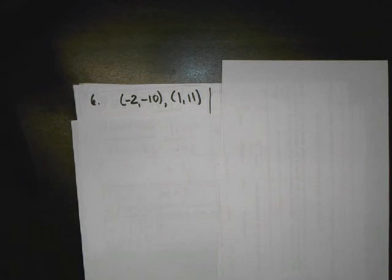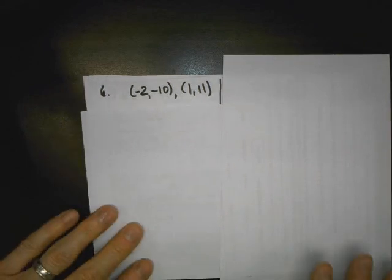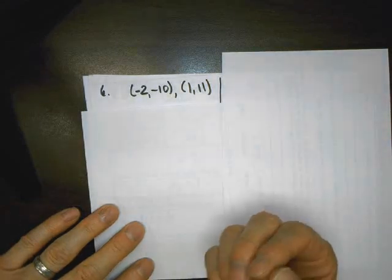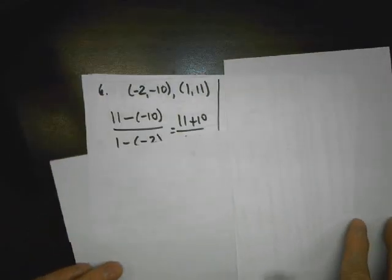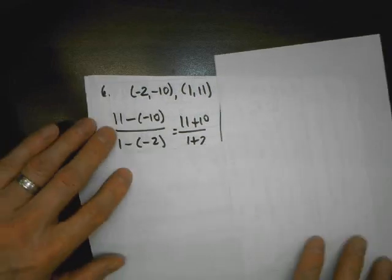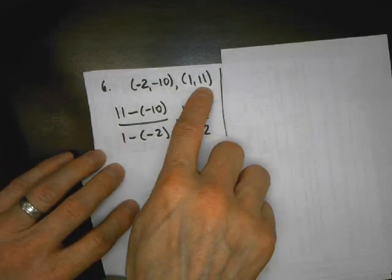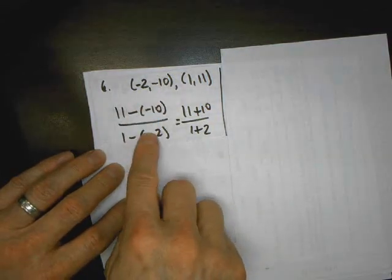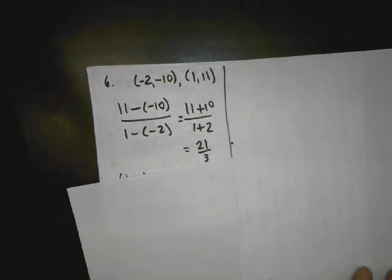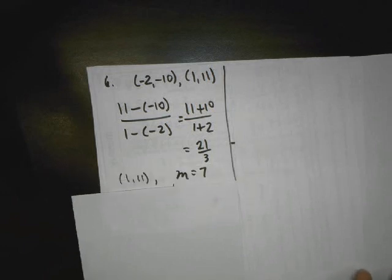For problem number six, we have two points, and we have to find the equation. So equation, the two things we need as we memorize in class, we need slope and the y-intercept. So to get the slope, we go, again, y minus y over x minus x. Make sure if you're going right minus left, you go right minus left on the bottom. So I do add the opposite, add the opposite teams, and I get a slope of 21 thirds, which is a slope of 7.